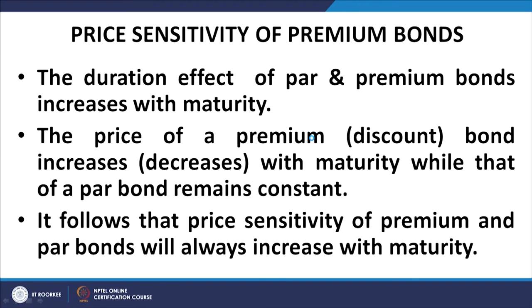However, in the case of a discount bond, the situation is slightly different. The duration of discount bonds first increases and then decreases, whereas the price of a discount bond decreases as maturity increases. Initially, for short maturities, the duration effect predominates over the price effect, and as a result DV01 increases initially for short maturities.